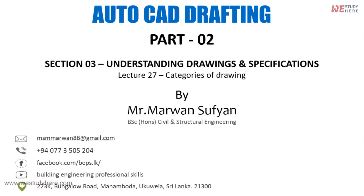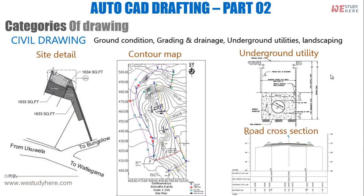AutoCAD Drafting Part 2, Section 3: Understanding Drawings and Specifications. Lecture 27 covers Categories of Drawings. The first category is Civil Drawing, which is about ground conditions.